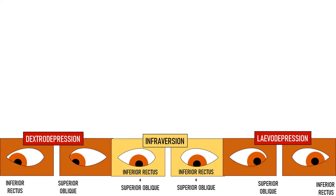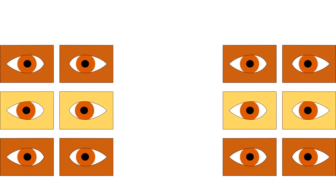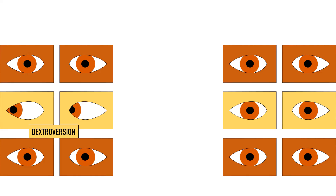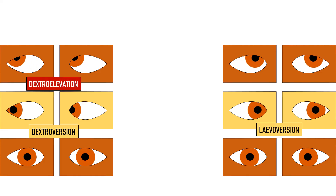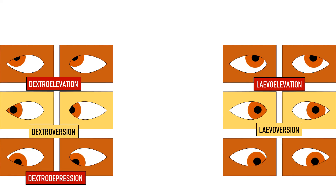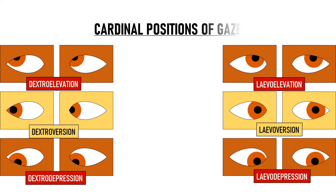The positions in which we isolate and check the actions of a single extraocular muscle of each eye — dextroversion, levoversion, dextro elevation, levo elevation, dextro depression, and levo depression — are known as the cardinal positions of gaze.